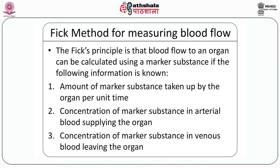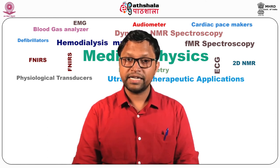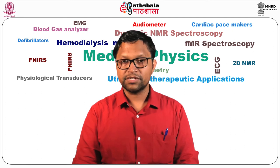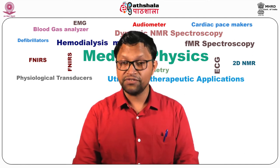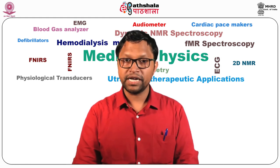For the Fick method, the following information should be known: first, the amount of marker substance taken up by the organ per unit time; second, the concentration of marker substance in arterial blood supplying the organ; third, the concentration of marker substance in venous blood leaving the organ. The most common use of the Fick method is to determine cardiac output. The oxygen content of the blood is calculated before and after flowing through the heart. From this, we can derive the arteriovenous oxygen difference, and the oxygen consumption for the whole body is calculated from venous sample and pulmonary artery sample. By using the formula, we can calculate the cardiac output. This is an invasive technique but very useful.